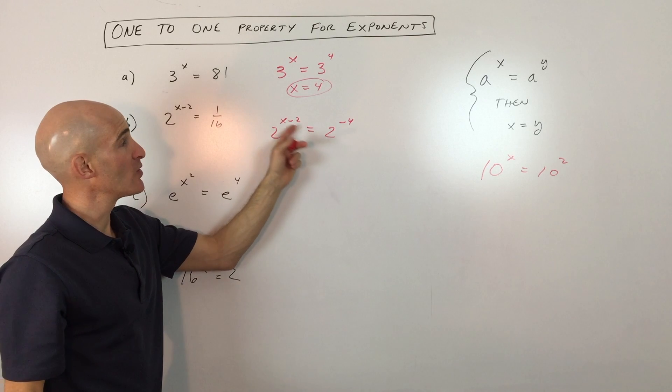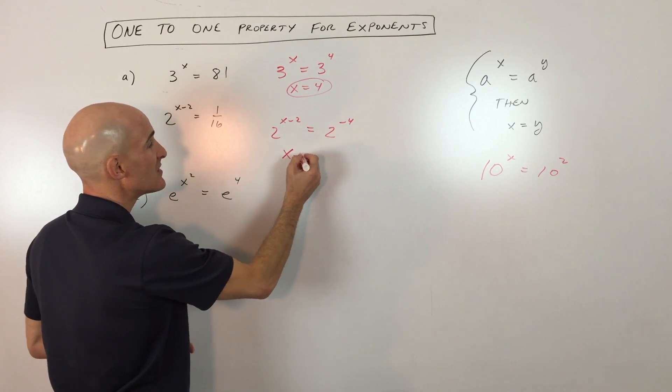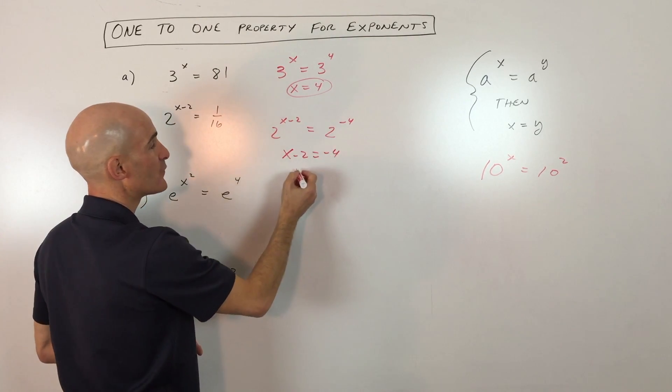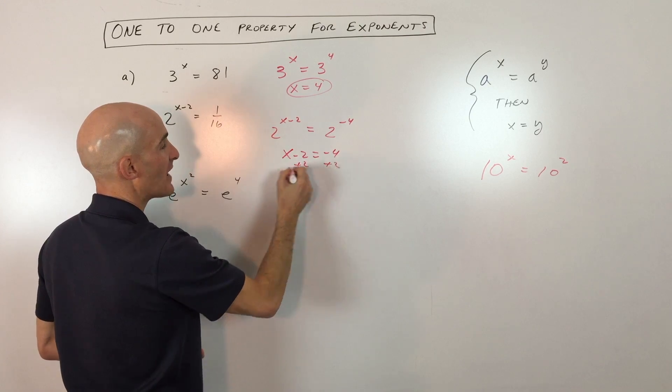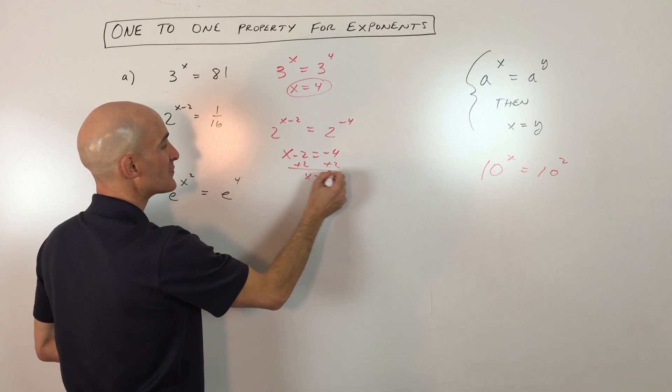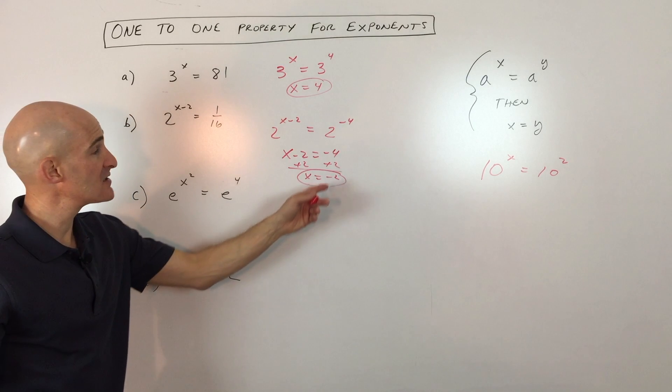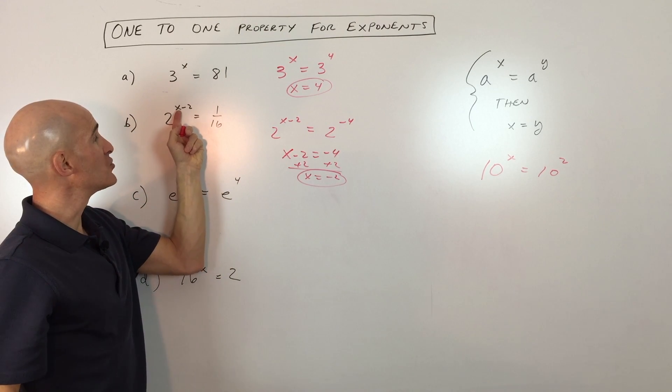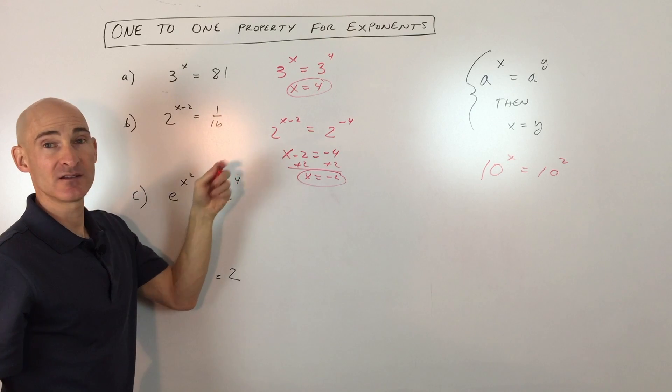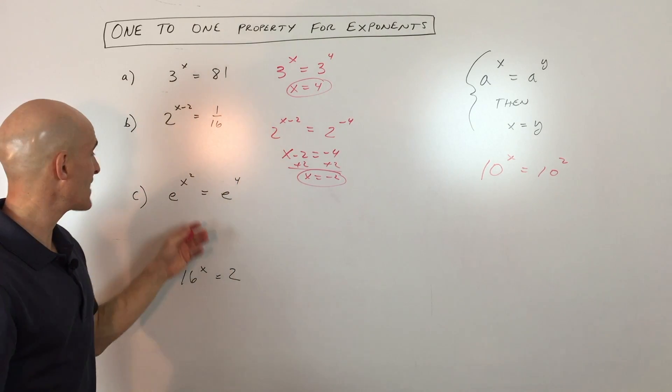So now we have the same base. We can set the powers equal, and you can see that x minus 2 equals negative 4. Add 2 to both sides, and you can see x equals negative 2. Now if you want to check your answer, just go ahead and take that negative 2, put it back in here, and you get 2 to the negative 4, which again, gives us 1/16th. Let's do another example.